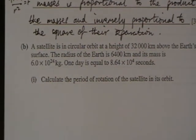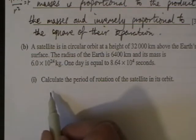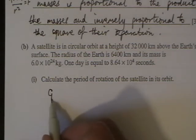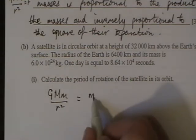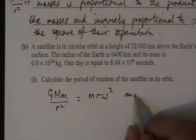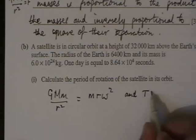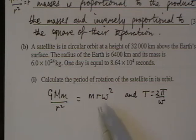We're going to start by saying that the centripetal force as it goes around is provided by the gravitational force. So GMM over R squared is equal to mRω². And we know that T equals 2π over ω. So GMM over R squared - the gravitational force - equals this centripetal force.